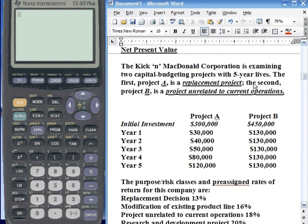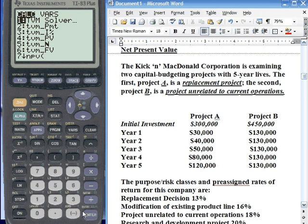Okay, so they're examining two capital budgeting projects with 5-year lives. The first project A is a replacement project. The second project B is a project unrelated to current operations. Okay, so we're first going to calculate project A. So we go to Applications, Finance. We're going to go to Net Present Value.